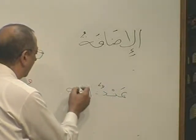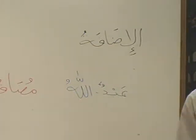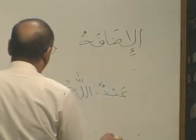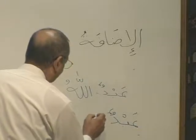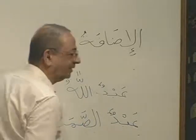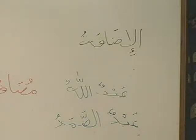Look at this: Abdun Allah — make it into Idaafa — Abdullah. Now, Abdu's Samad — Samadi — but we don't say Abdu's Samadi, we say Abdu's Samad. I always prefer to call him Abdu's Samad, because that is the proper name.